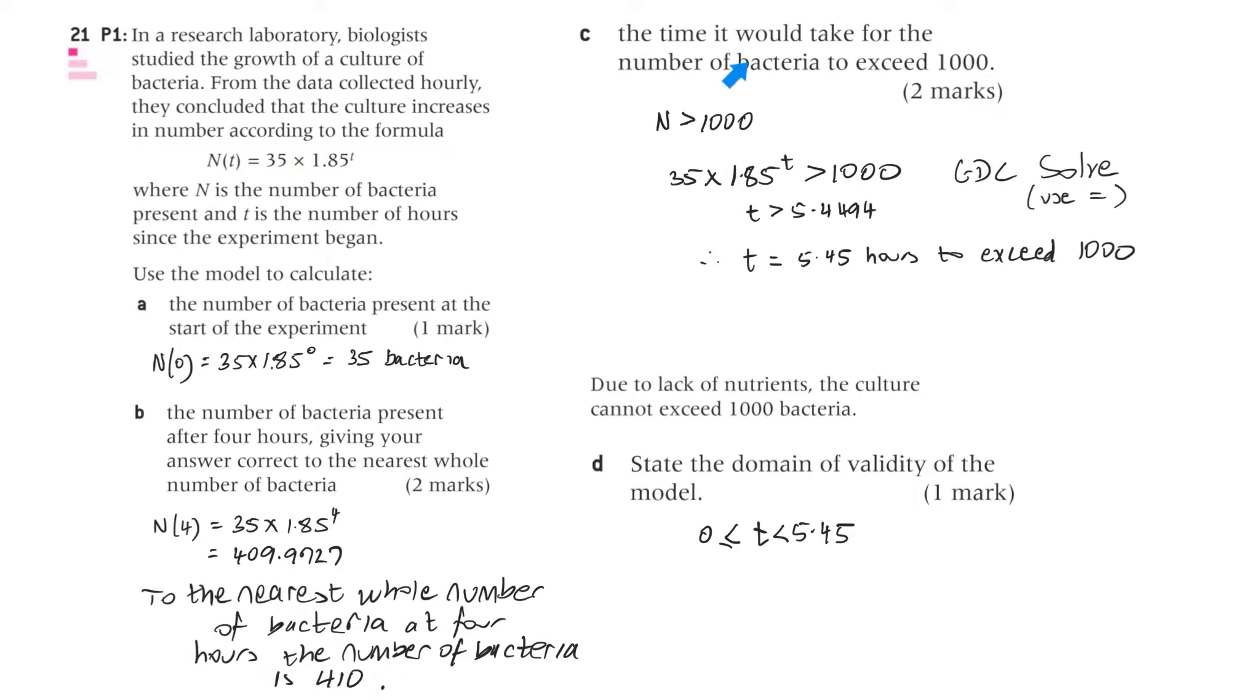Part C, the time it would take for the number of bacteria to exceed 1,000. So where that's n is greater than 1,000. So 35, so the function is greater than 1,000. Now in GDC solve, just use the equal sign, find the value, and that was 5.4494. Well, where t is greater than 5.4494, therefore t equals 5.45 hours to exceed 1,000 bacteria. And remember, that's three significant figures.